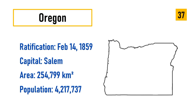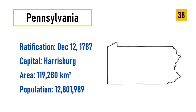Number 37: Oregon, ratification February 14, 1859, capital Salem, area 254,799 square kilometers, population 4,217,737. Number 38: Pennsylvania, ratification December 12, 1787, capital Harrisburg, area 119,280 square kilometers, population 12,801,989.